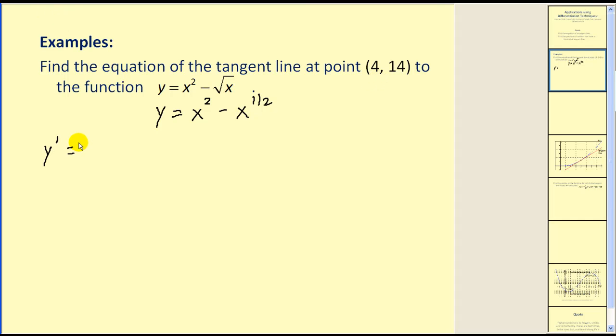Let's try it. Y prime is equal to the derivative of x squared, which would be 2x, minus the derivative of x to the one-half. That would be one-half times x to the power of one-half minus 1, which would be negative one-half.